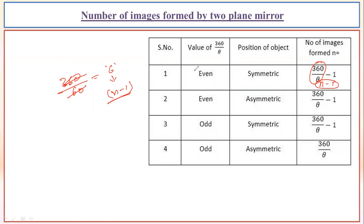I'm telling again what symmetrical and asymmetrical mean. If two mirrors are placed together and the object is present at the midpoint or the bisecting point, then it is called a symmetrical position. So if n is even, the total number of images forming will be counted as n minus one.